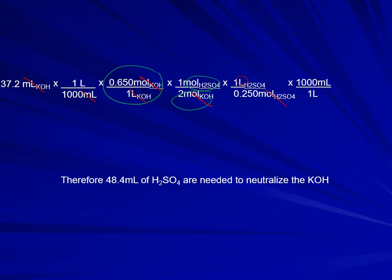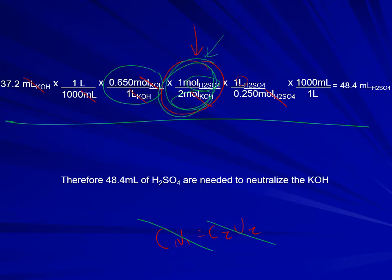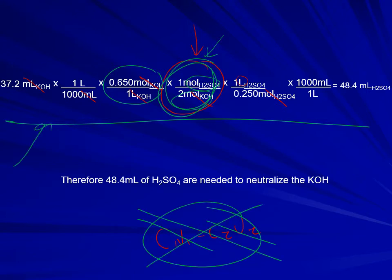The question asks for milliliters, so we do a final unit conversion to get our answer. Note that this is a 1:2 ratio — one mole of acid reacts with two moles of potassium hydroxide. Do not try to solve a neutralization reaction using C1V1 = C2V2. That formula could work as a shortcut only for a one-to-one ratio, but if the ratio is not one-to-one — as in this question — C1V1 = C2V2 will not work. Always use the full stoichiometry approach.